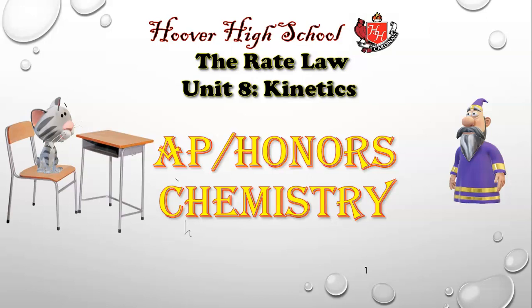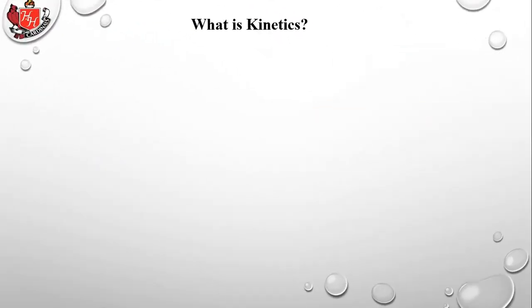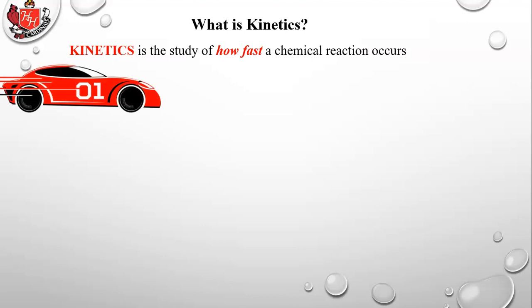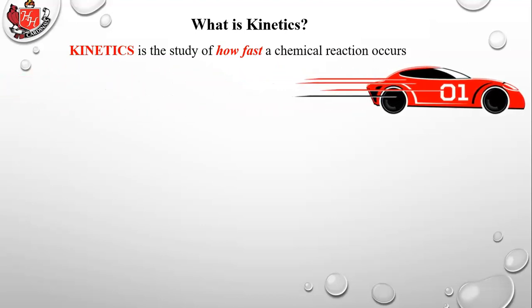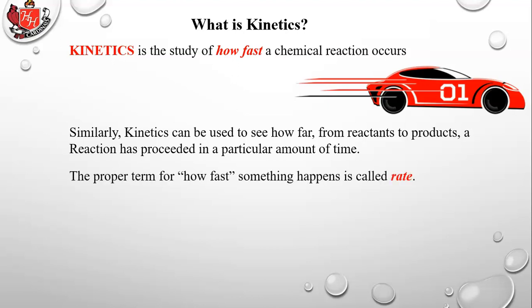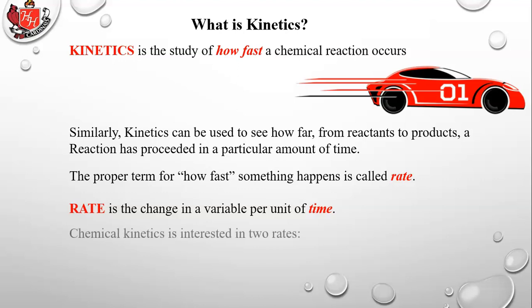Okay chemistry, we're moving on to a new unit — unit 8 on kinetics. The first lesson is on the rate law and rate expressions. Kinetics is the study of how fast a chemical reaction occurs, basically the speed of a chemical reaction. It can also be used to see how far from reactants to products a reaction has proceeded in a particular amount of time. The proper term for how fast something happens is called rate — the change in a variable per unit of time.